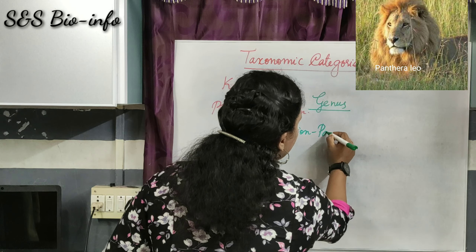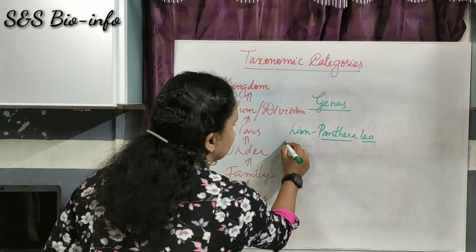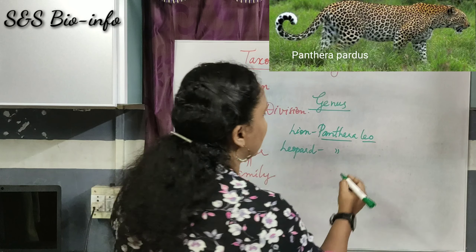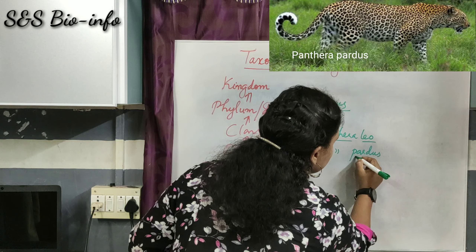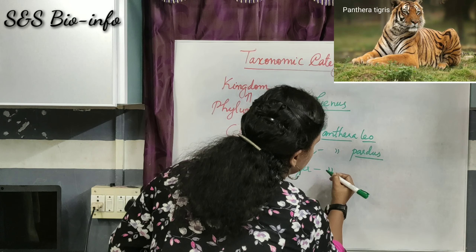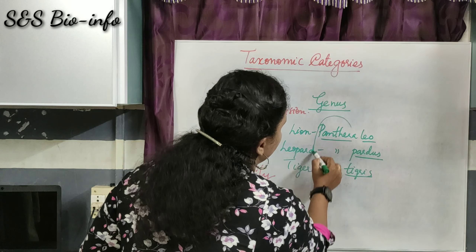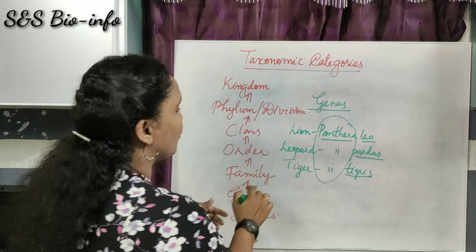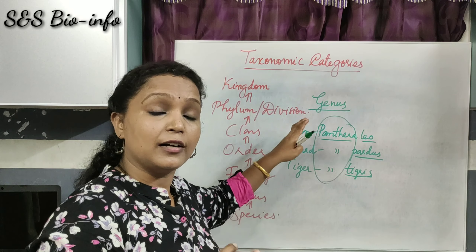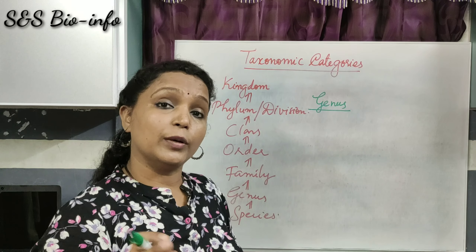The scientific names are: Lion — Panthera leo; Leopard — Panthera pardus; Tiger — Panthera tigris. Here the genus Panthera is common for these three animals, as they are closely related species. That is the meaning of the term Genus: a group of closely related species.